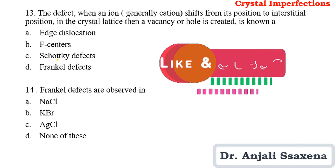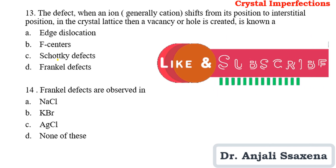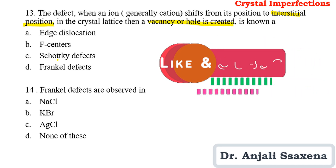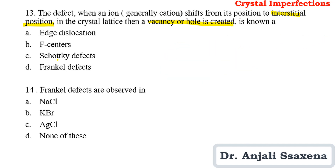Question 13: The defect when an ion, generally a cation, shifts from its position to an interstitial position in the crystal lattice, creating a vacancy or hole, is known as — interstitial plus vacancy — of course it is Frenkel defect. Question 14: Frenkel defects are observed in — KBr shows Schottky defect, while AgCl shows Frenkel defect.